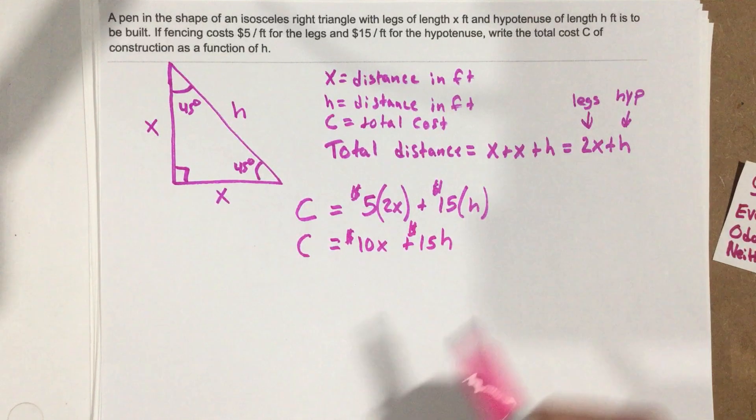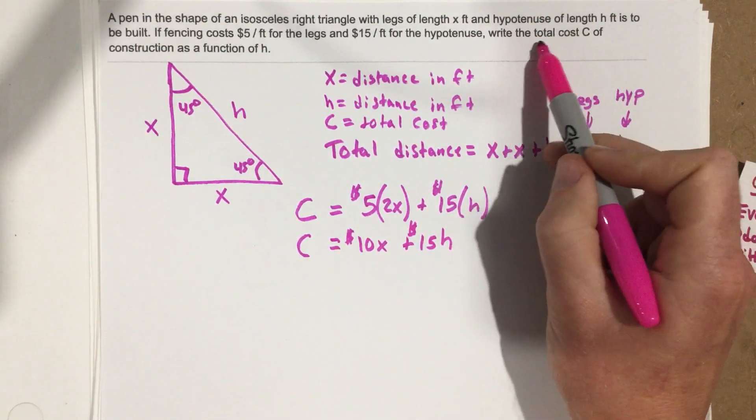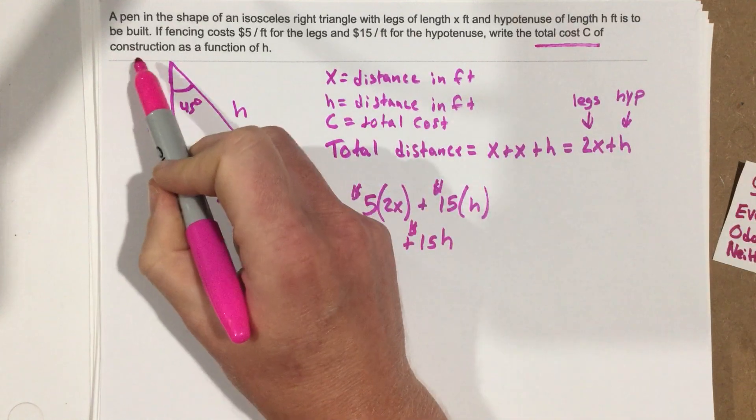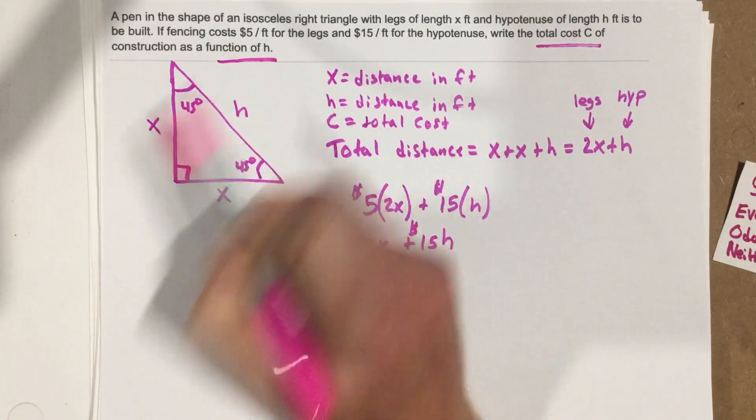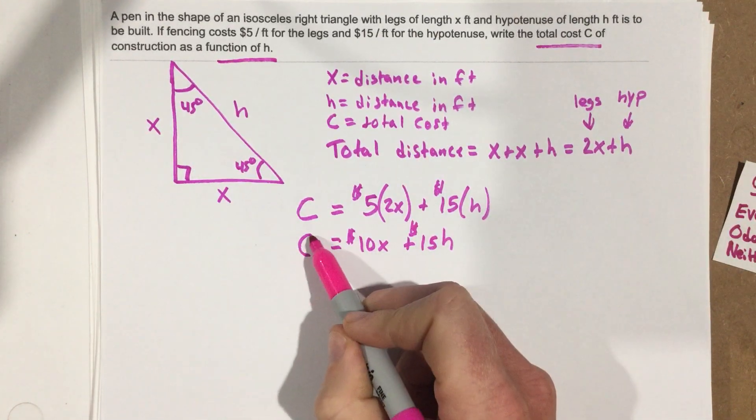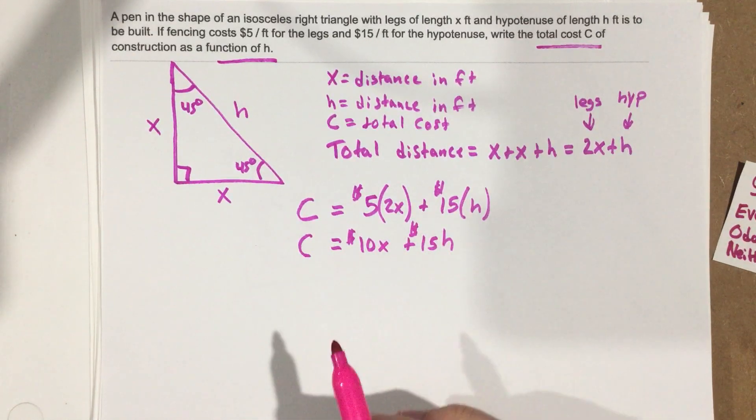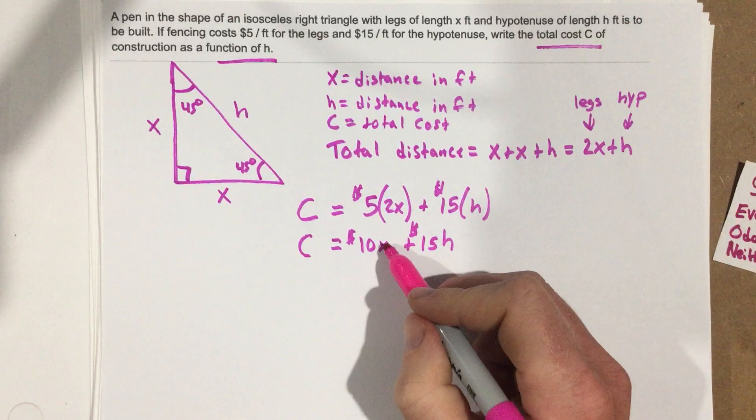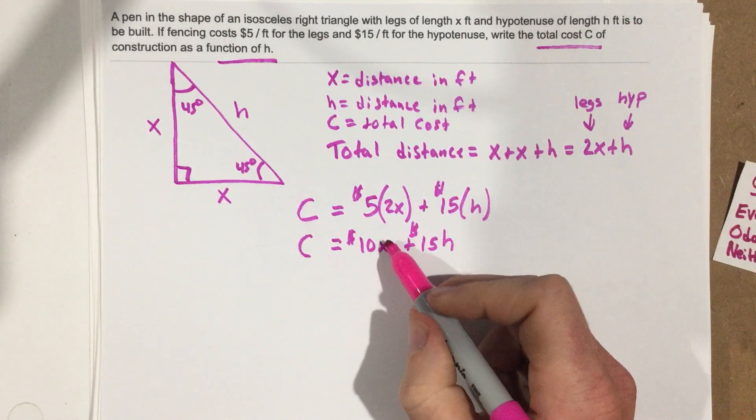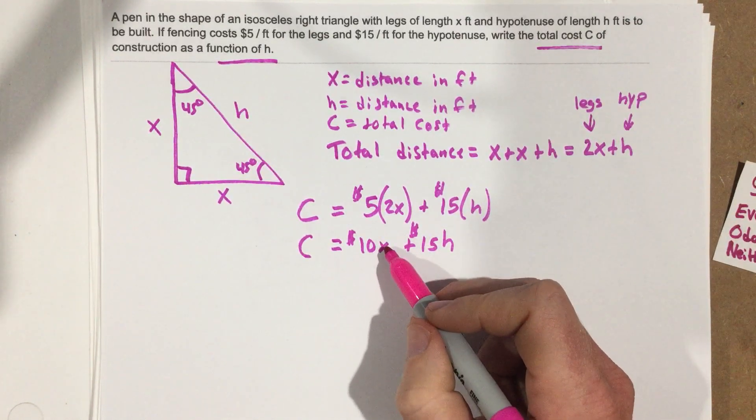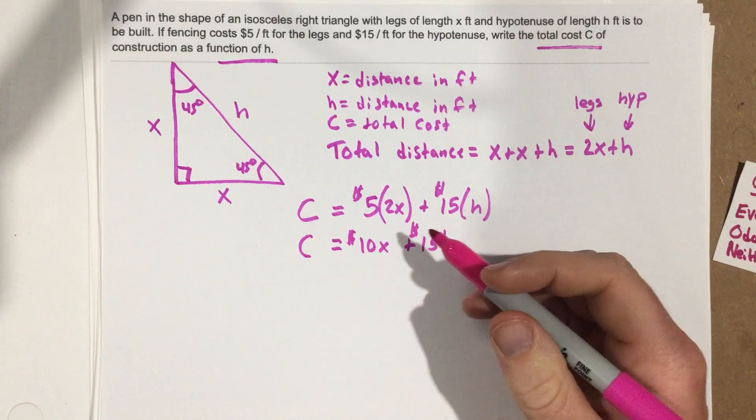The last bit is the harder part to interpret. They say write the total cost C of construction as a function of H, meaning we have C equal to an equation with only H's in it. We have an H, but we have this X value. So how can we write X itself in terms of H?